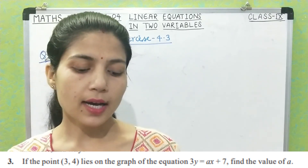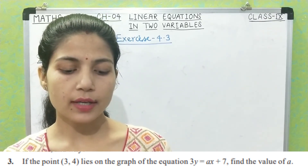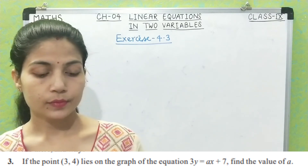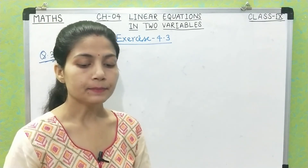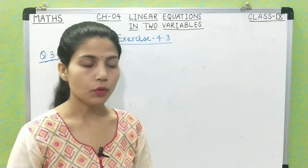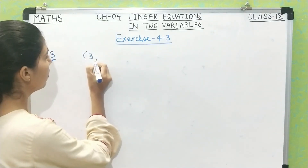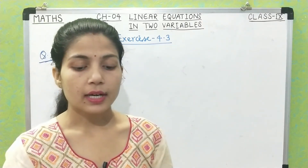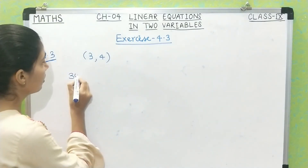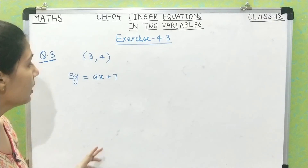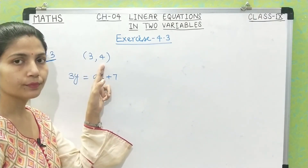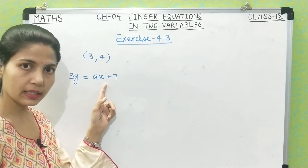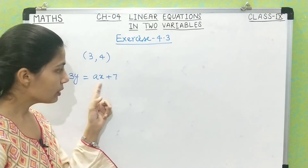Question number three: if the point (3, 4) lies on the graph of the equation 3y = ax + 7, find the value of a. The point (3, 4) lies on the line represented by this equation. This is a linear equation in two variables, and its graph is a line. Since this point lies on the line, it will satisfy the equation.